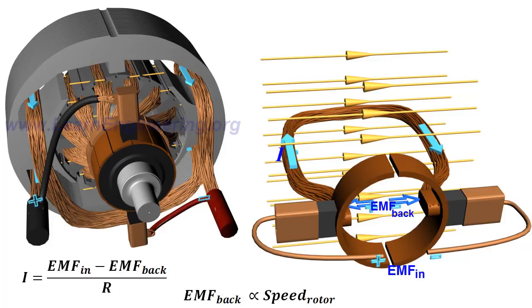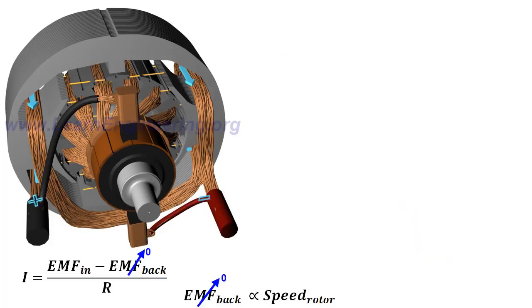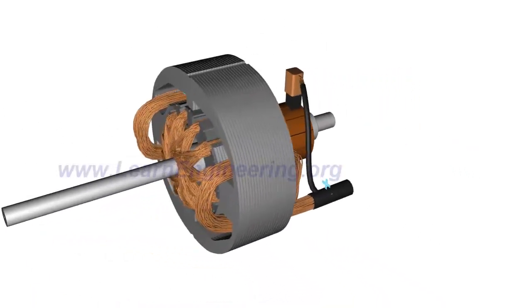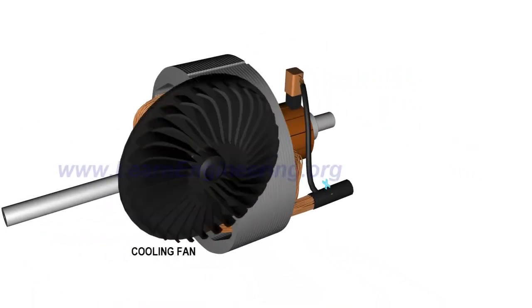At the starting of the motor, back EMF is too low, thus the armature current becomes too high, leading to the burnout of the rotor. Thus, a proper starting mechanism that controls the applied input voltage is necessary in large DC motors.